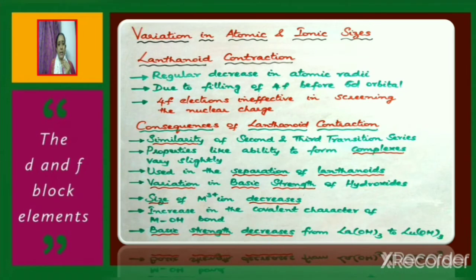We shall discuss about lanthanoid contraction — what it is, its causes, and consequences. It is found that there is a regular decrease in the atomic radii as we move from lanthanum to lutetium among lanthanoids. This regular decrease in atomic radii among lanthanoids is known as lanthanoid contraction.